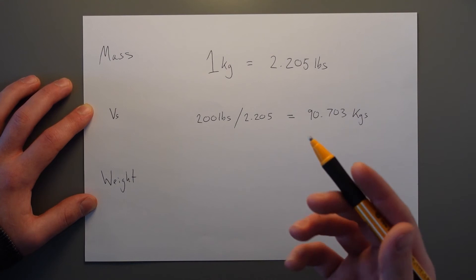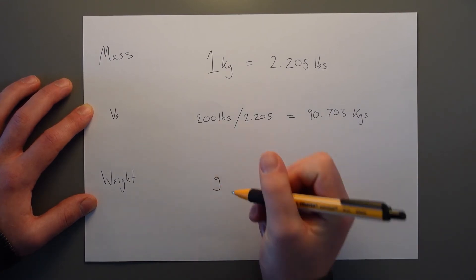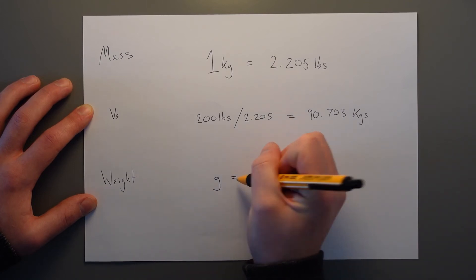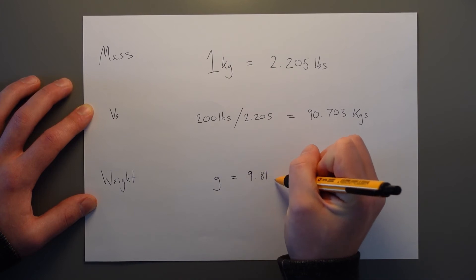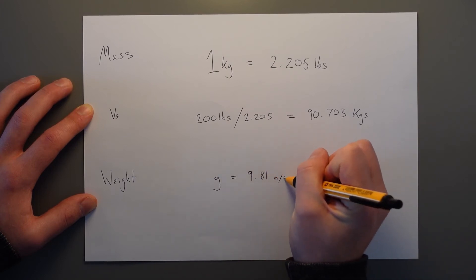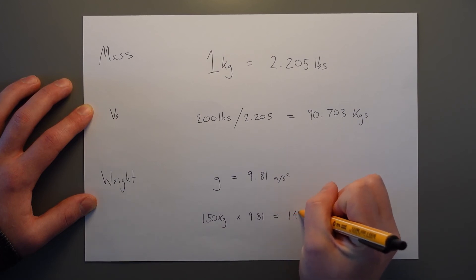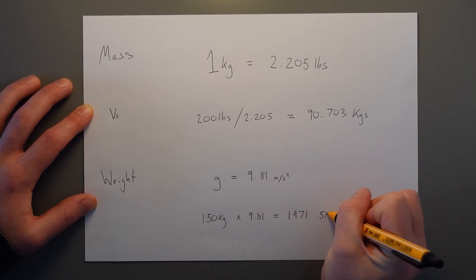Now, this is a very easy thing to do. We just use the g constant, which stands for the acceleration due to gravity. And in aviation, we use the figure 9.81 meters per second squared. So if we have a mass of 150 kilograms and we want to know the weight, we multiply by 9.81 and come up with an answer of 1471.5 newtons.